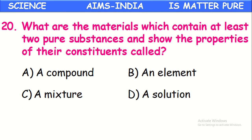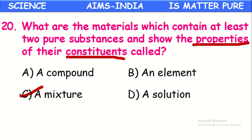What are materials which contain at least two pure substances and show their properties separately? That is called a mixture. If the individual components' characteristics or properties are shown clearly, then it is called a mixture.